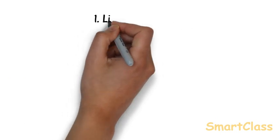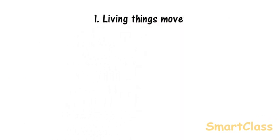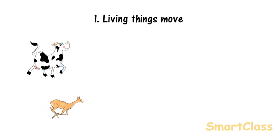Living things have some common features amongst them. First, living things move on their own. They move in search of food and shelter or to escape from their enemies.